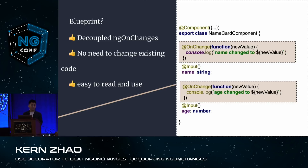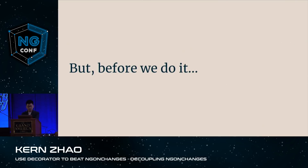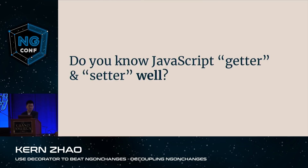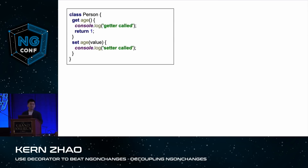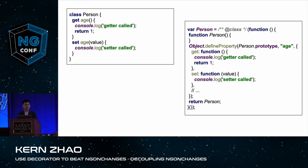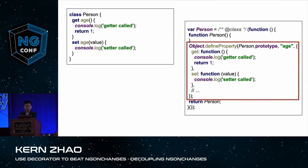Now let's implement the onChange decorator. But first — do you know JavaScript getters and setters well enough? Let me introduce a little deeper knowledge. This is a TypeScript class Person with a getter and setter for the property age. When compiled into ES5, we can see how getter and setter is implemented under the hood: Object.defineProperty is called with three parameters — the prototype of Person, the property key, and a configuration object.